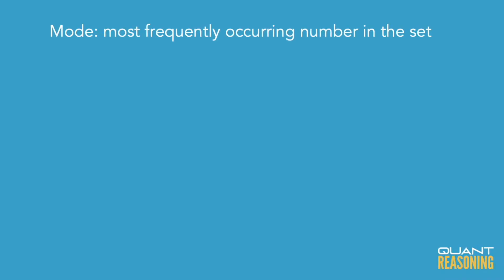That means we could have a mode — a number that appears multiple times. The mode of the set is the number that appears the most times; it's the most frequently occurring number in the set.